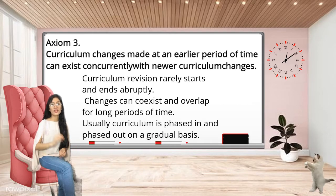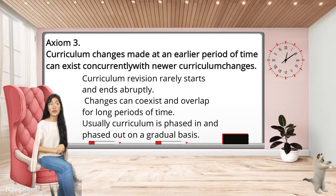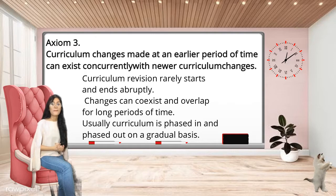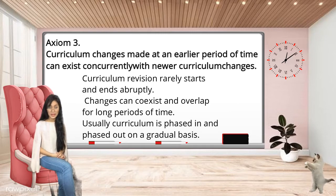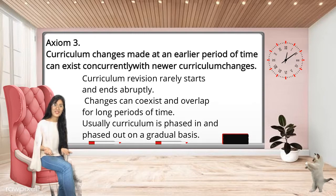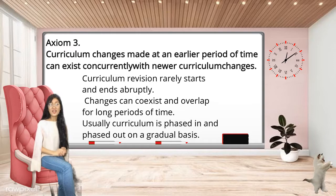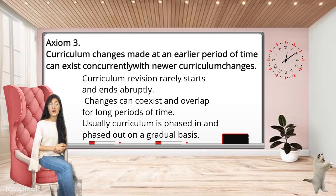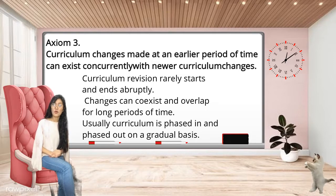Axiom 3: Curriculum changes made in an earlier period of time can exist concurrently with newer curriculum changes. Curriculum change is concurrent, meaning that changes made earlier can affect changes being made now, but they can also co-exist side by side. Just like now, with the emerging use of technology the curriculum changes; however, traditional learning can still co-exist and is still applicable to our generation.